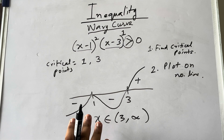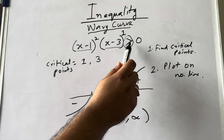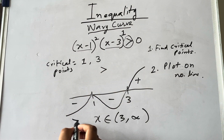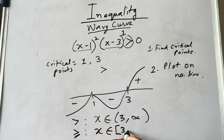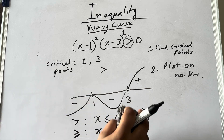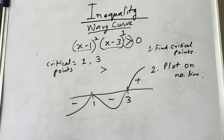If the sign had been greater than or equal to, you include the point 3 as well — so x ∈ [3, ∞). Now I will show what would have happened if the question had been less than or equal to. For less than or equal to, you take the negative part. The negative part comes from minus infinity, so you would take minus infinity till 1.